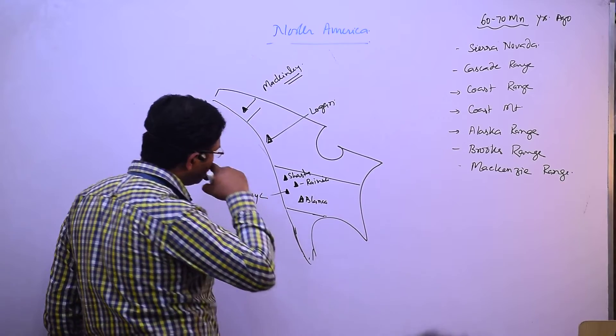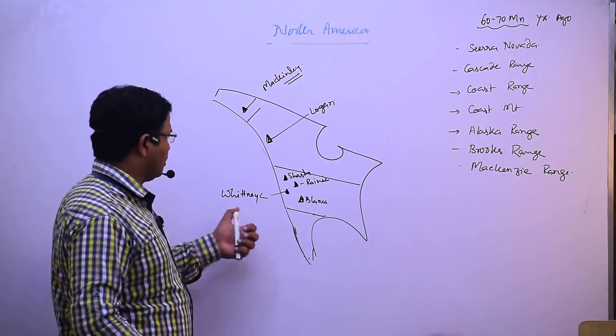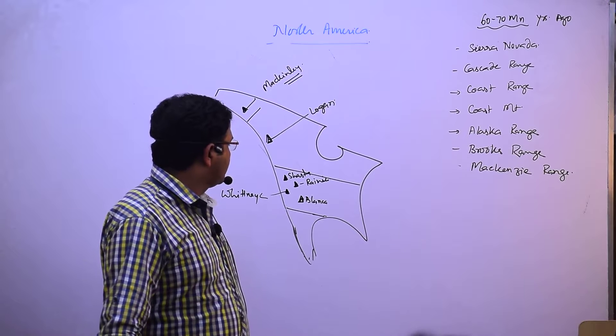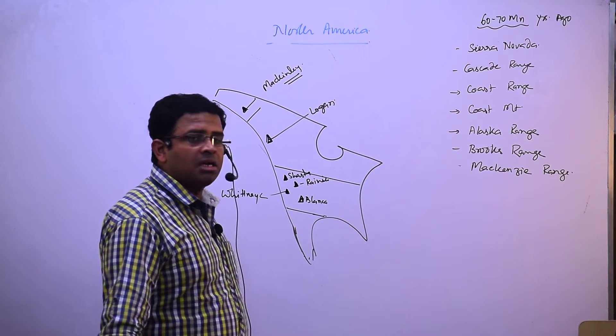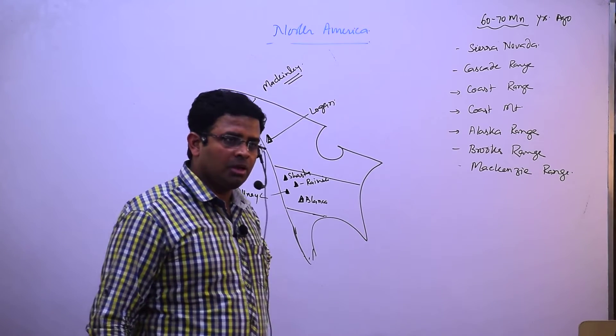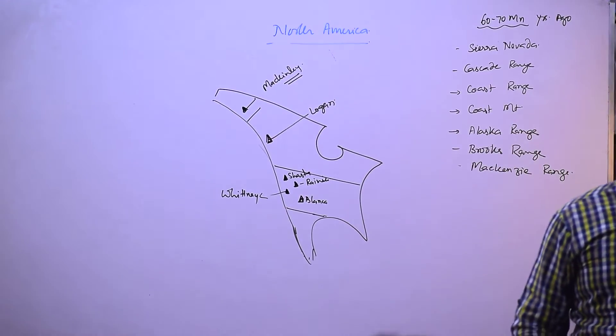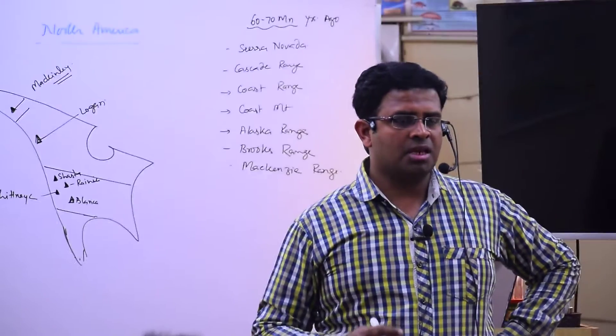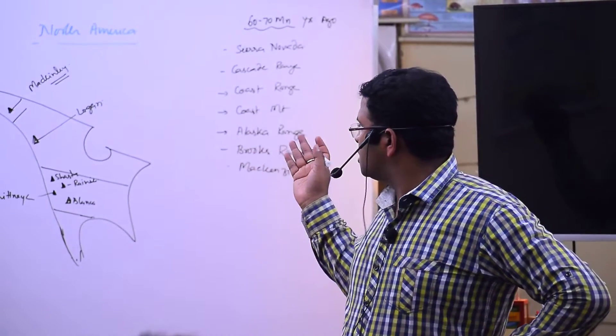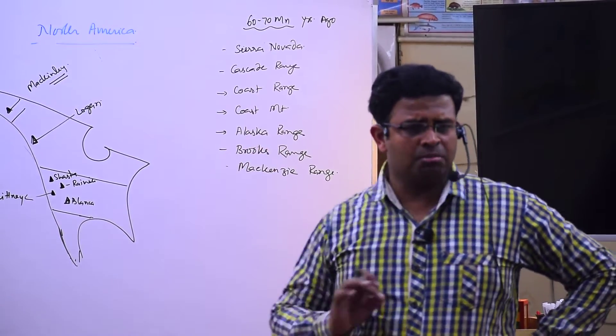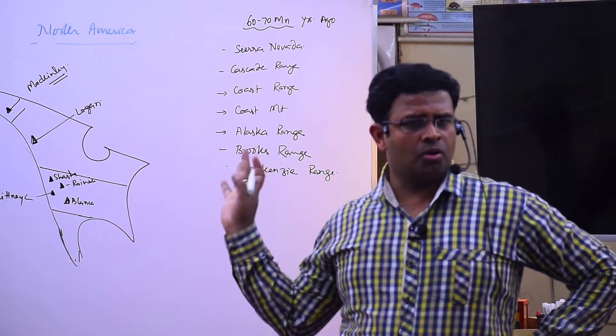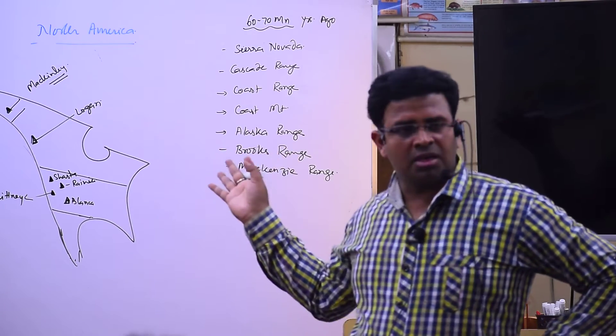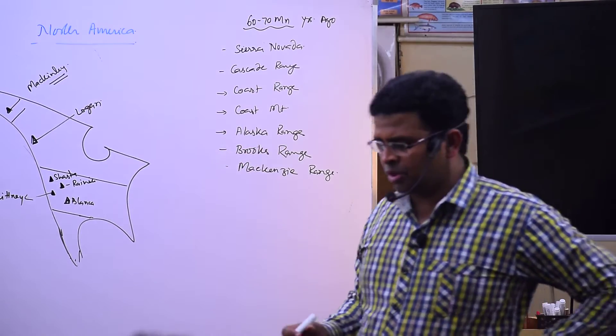So these are the famous four peaks in the continuation of the Rockies. Shasta, Rainier, Whitney, Blanca. Which are the important peaks? Mount McKinley is the highest peak of USA, North America, Alaska, and Mount Logan in Canada. Thereafter Shasta, Rainier. 6000 meter McKinley, 6192, around you have to see, 6000. Logan is also around 5800 something, 5000-6000 nearby, and thereafter all these are 4000 to 4500 range.